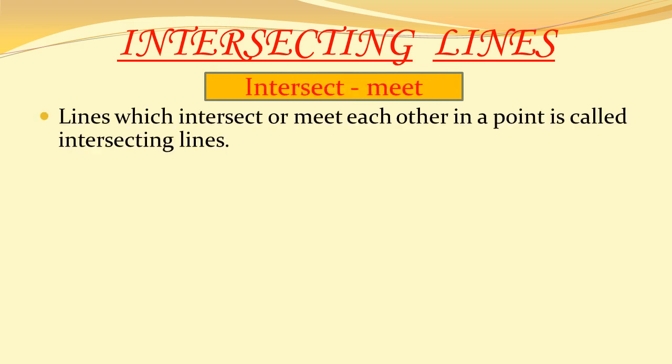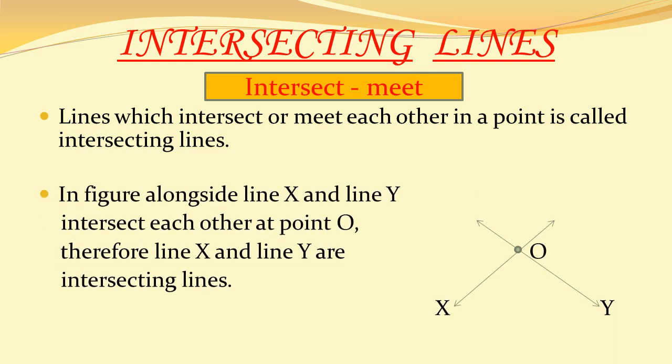Lines which intersect or meet each other in a fixed point are called intersecting lines. You can see in the figure line X and line Y intersect each other at point O. Therefore, line X and line Y are intersecting lines.